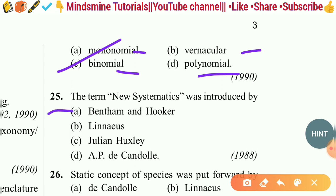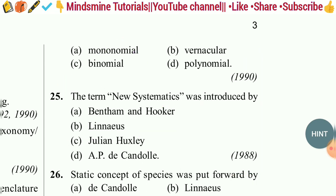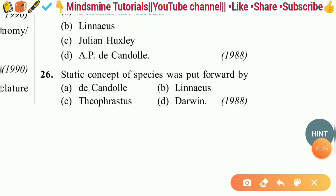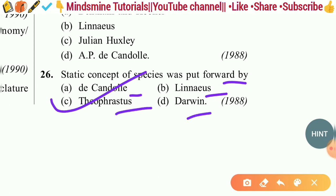Question twenty-five: The term 'new systematics' was introduced by — Bentham and Hooker, Linnaeus, Julian Huxley, or de Candolle? The correct answer is option C — Julian Huxley. Question twenty-six: The static concept of species was put forward by — de Candolle, Linnaeus, Theophrastus, or Darwin? The correct answer is option C — Theophrastus gave the static concept of species.